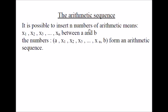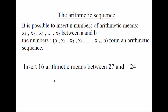It's possible to insert N arithmetic means X1, X2, X3 up to Xn between two numbers A and B. In this case, A, X1, X2, X3 up to Xn, then B will form an arithmetic sequence. Now let's see how to insert N arithmetic means between two numbers. Example: insert 16 arithmetic means between 27 and negative 24.